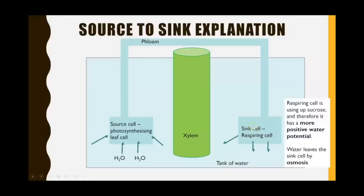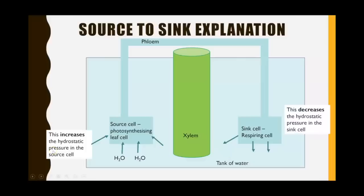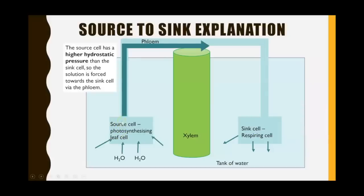At the sink cell, respiration uses up lots of the soluble sugars, so fewer soluble sugars remain. That cell will have a more positive water potential compared to its surroundings, meaning water moves out of the sink cell by osmosis. This affects pressure: the source cell has increased hydrostatic pressure because liquid moves in, while the sink cell has decreased hydrostatic pressure because liquid moves out. The higher pressure at the source forces the sugary solution out through the phloem towards the sink cell — moving the solution on mass to the respiring cells. That is the mass flow hypothesis.